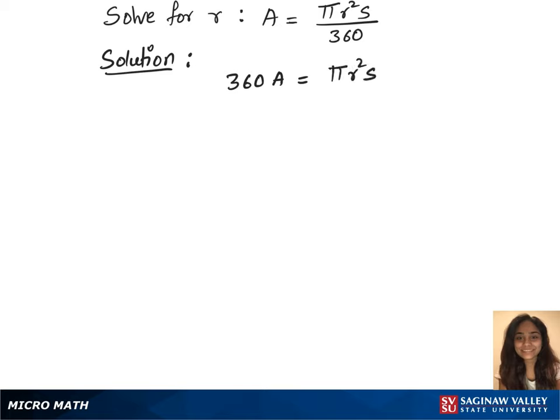In our next step, we will divide pi and S on both the sides, which gives us 360A over pi times S.